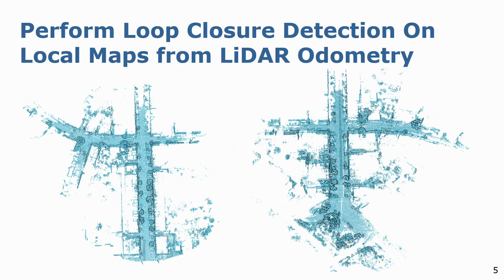In particular, we generate local maps using registered point clouds within a fixed travel distance. An example of two such local maps belonging to the same physical location recorded at different timestamps can be seen here. These locally consistent maps form the primary representation for loop closure detection, instead of the traditional single scan-based representations. However, since such a dense 3D representation of the scene incurs high computational costs for place recognition, we furthermore compress these local maps into a compact 2D representation.